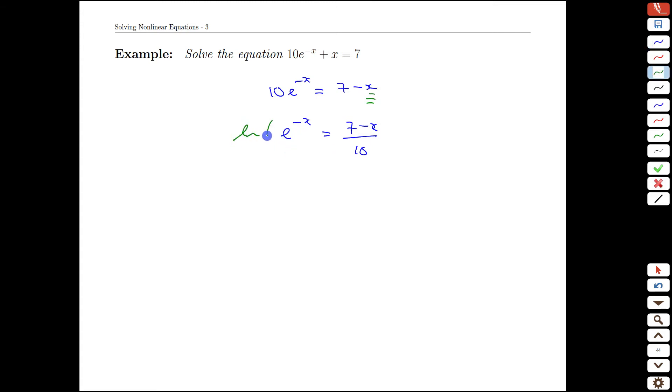For instance, if we take ln on both sides now, that doesn't really help. We have negative x equals ln of 7 minus x over 10, but then I have an x on both sides, so that didn't help.